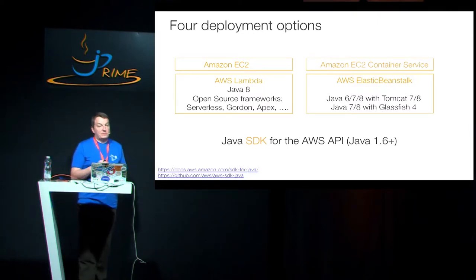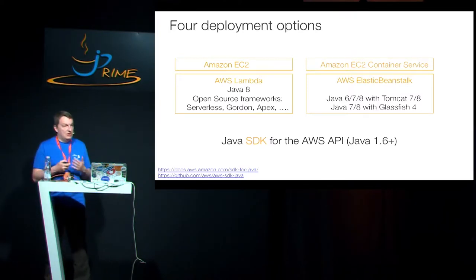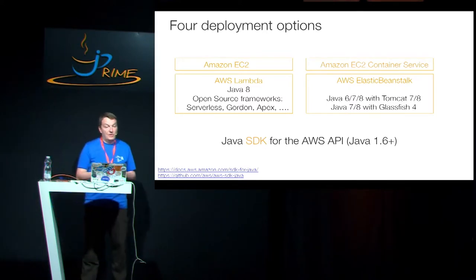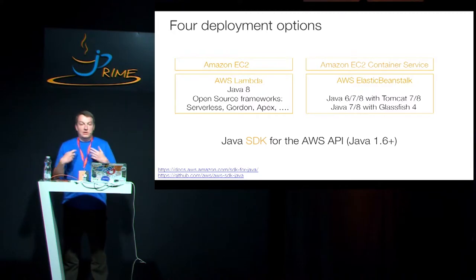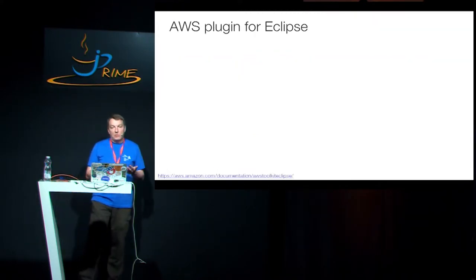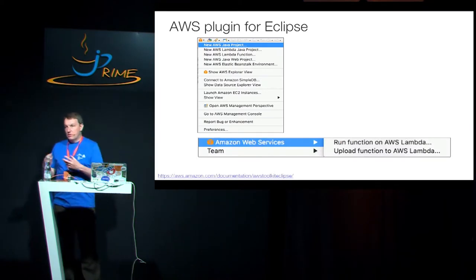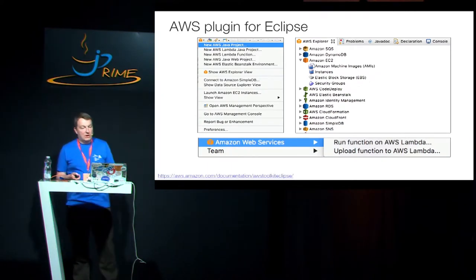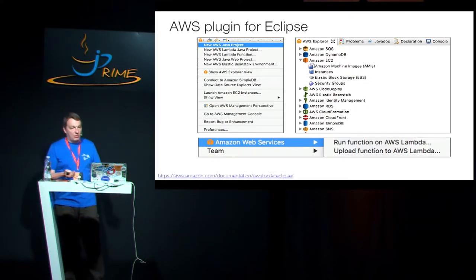We have a Java SDK that's been around for a long time and supports versions 1.6 and up. Using this SDK you can call all the APIs of all AWS services. When it comes to tooling, we maintain an AWS plugin for Eclipse which allows you to have wizards and project support, but more interestingly you can manage quite a few of your AWS resources inside Eclipse — you can look at your EC2 instances and database instances right from your Eclipse tool, which is nice.